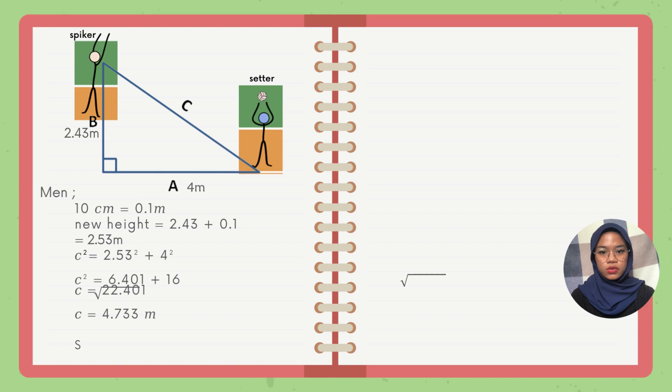We use the same method: the Pythagorean theorem. C squared equals 2.53 squared plus 4 squared. Solving the right side: C squared equals 6.401 plus 16. Bringing the square to the right side, C equals the square root of 22.401, and we get C equal to 4.033m. So the new distance of ball toss for men is 4.033m.